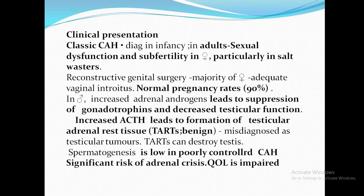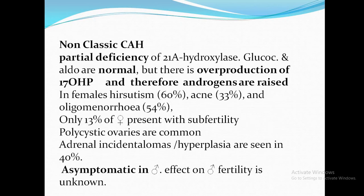Spermatogenesis is impaired in poorly controlled CAH due to gonadotrophin suppression. There is a significant risk of adrenal crisis and impaired quality of life. In non-classical CAH, glucocorticoids and aldosterone are normal, but there is overproduction of 17-hydroxyprogesterone, so androgens are raised. Females present with hirsutism, acne, and oligomenorrhea — similar to PCOS — and polycystic ovaries are common. It is also associated with adrenal adenomas and hyperplasia. Males are usually asymptomatic, and the effect on male fertility is unknown.